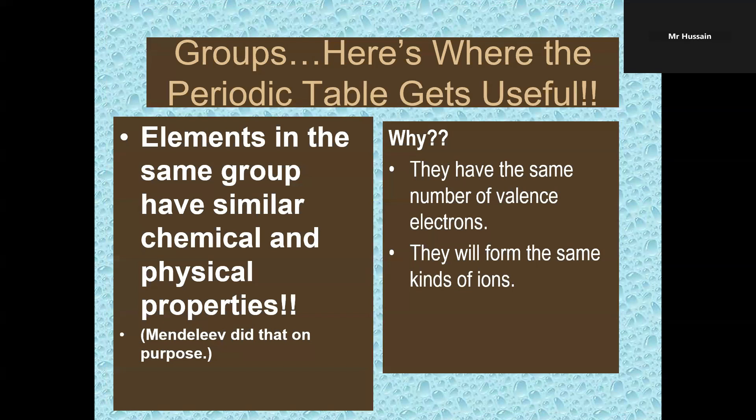Elements in the same group have similar chemical and physical properties. Why? Because they have the same number of valence electrons and they will form the same kind of ions. You will know about ions later.